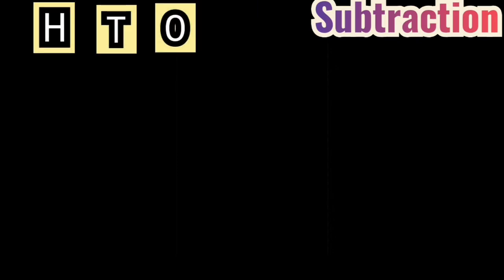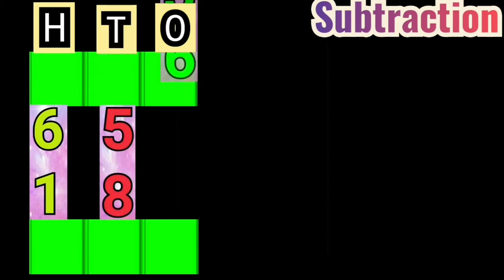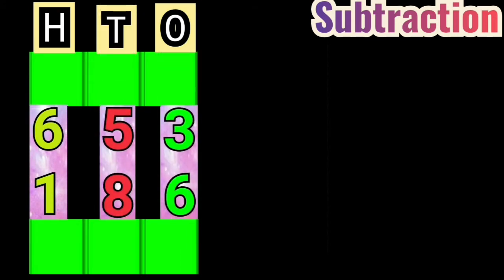First, we will arrange the numbers in hundreds, tens and ones column like this. Look at the numbers. 3 and 6 are in the ones column. 5 and 8 are in the tens column. 6 and 1 are in the hundreds column.